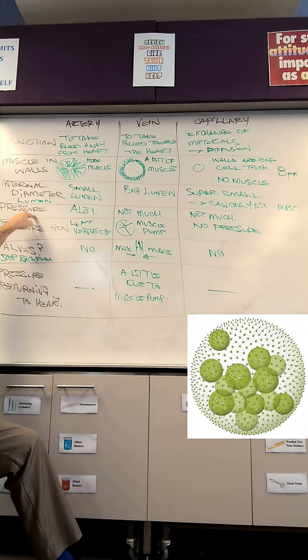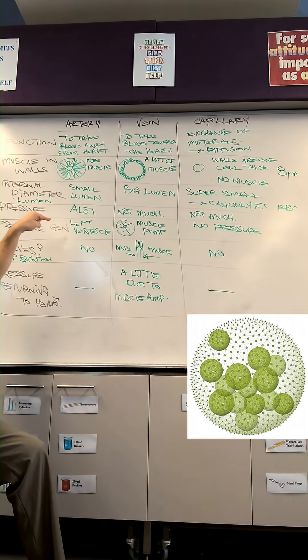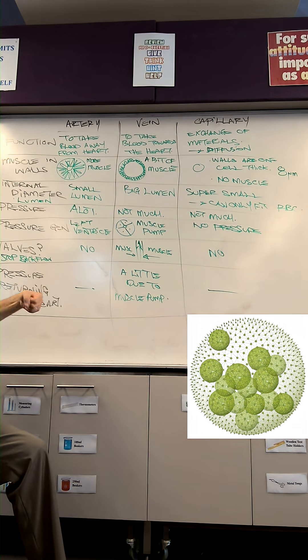The pressure in the arteries is a lot because the left ventricle is a very strong muscle itself. So the pressure generation is the left ventricle.